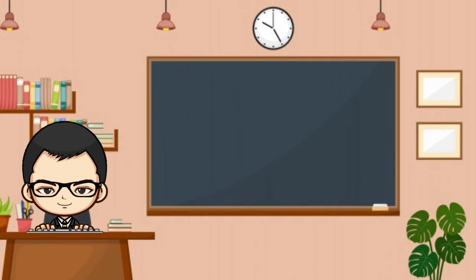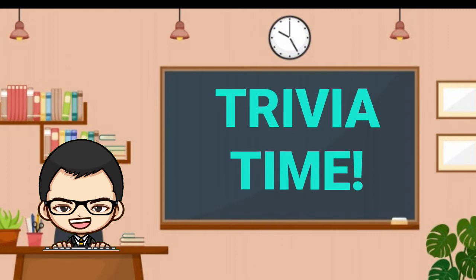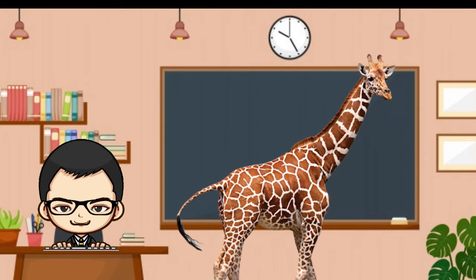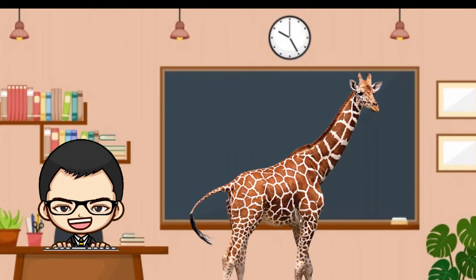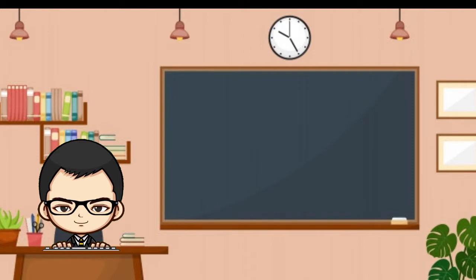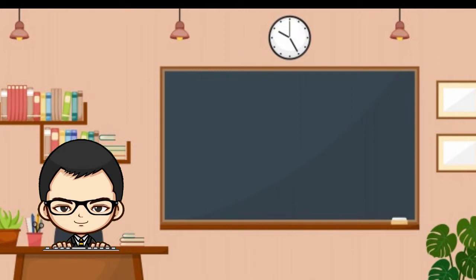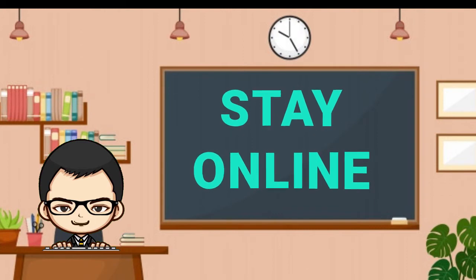Do you understand now? Okay, now it's trivia time. Please answer my questions. Look at the picture — giraffes have a long neck. How does having a long neck help the giraffes? Think about it. Number two: do you know that some birds have a large, colorful beak? Can you mention them? We will discuss the answers in the comments. Please post your answer in the comments and your teacher will check it for you.